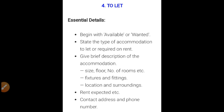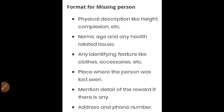Here is the format for a missing person ad. You have to give physical description like height and complexion, then name and age, any health-related issue (like whether the person is not in their senses), any identifying features like clothes or accessories, the place where the person was last seen, details of the reward if any, and at last address and phone number.